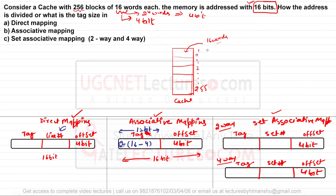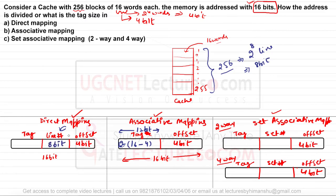In direct mapping, we also need to account for the line number, which depends on how many cache lines there are. Since there are 256 cache lines, and 256 = 2^8, the line number requires 8 bits. Together the offset (4 bits) and line number (8 bits) total 12 bits, leaving 4 bits for the tag. So in direct mapping: line number = 8 bits, tag = 4 bits.